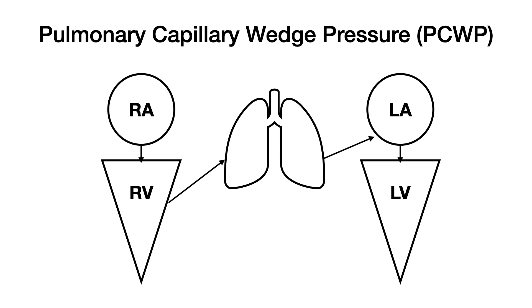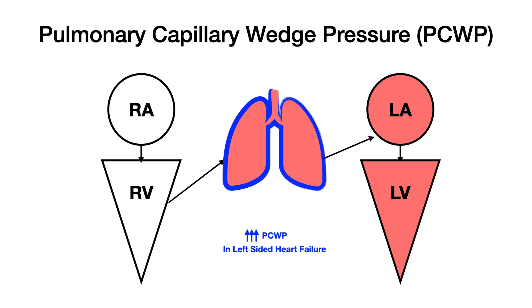To simplify what PCWP means: normally, blood flows from right atrium to right ventricle to lungs to left atrium to left ventricle and out. In left-sided heart failure, the left ventricle cannot pump blood, so blood fills up in the left ventricle, the left atrium, and backs up into the pulmonary system. When this happens, if you were to wedge a catheter into the lungs, your pulmonary capillary wedge pressure would be elevated.